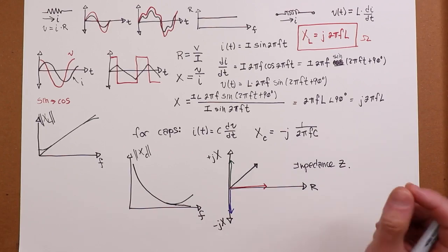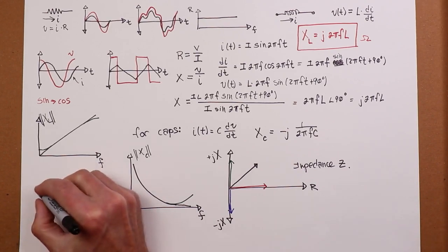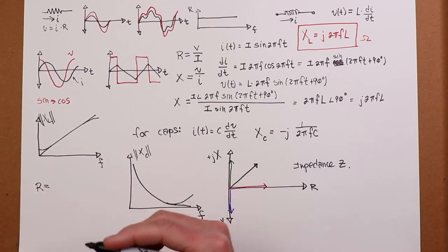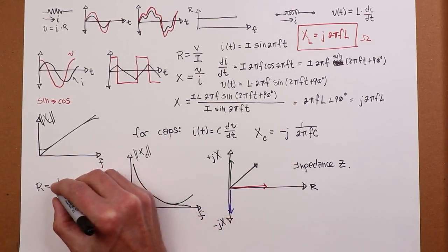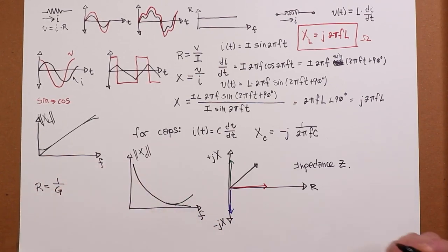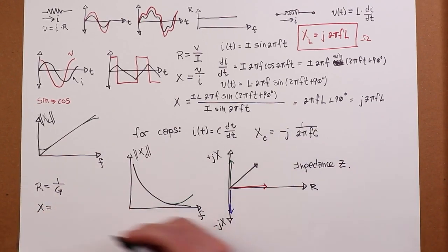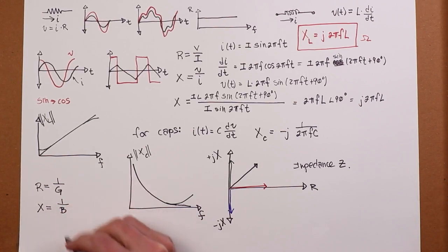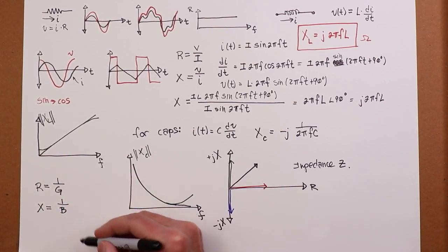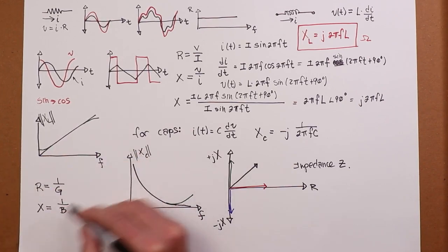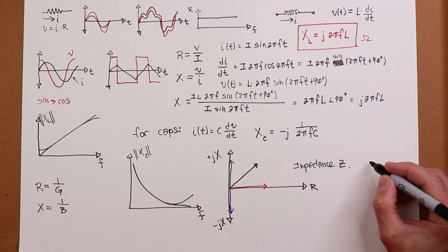But before we go, there's one other little detail I want to add in here. And that is just like resistance has its flip, its reciprocal, conductance, 1 over G. The same thing is true with reactance. The flip for reactance is called susceptance, 1 over B. So, susceptance is to conductance as reactance is to resistance. So, we might use a susceptance if we have, like parallel combinations and things like that.